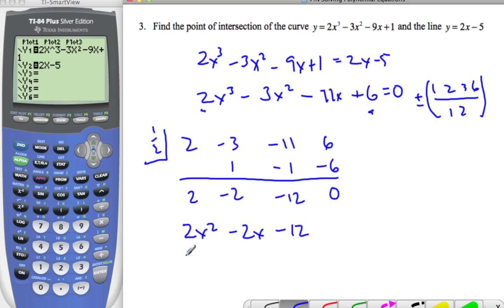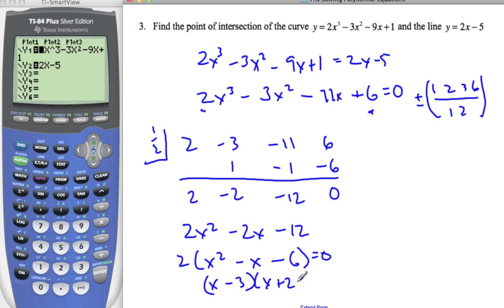If I factor out the 2, I'm left with x² - x - 6 = 0. And so (x - 3)(x + 2) = 0. And so I have three x's: x is 1/2, x is 3, and x is -2.